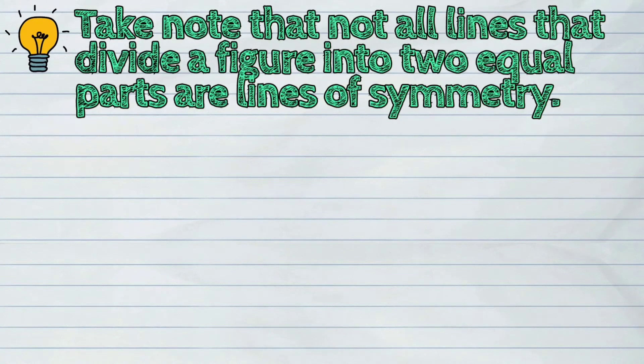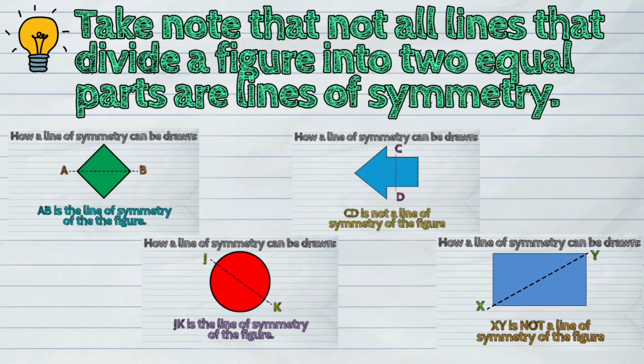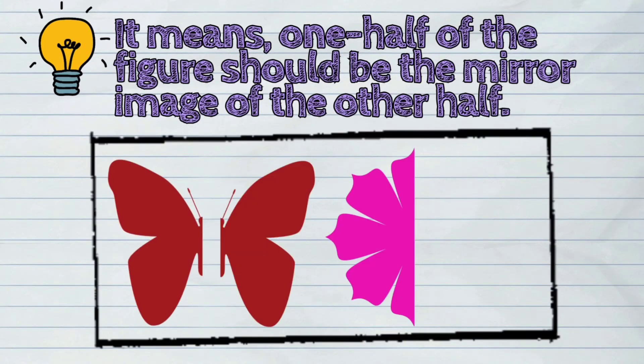Take note that not all lines that divide a figure into two equal parts are lines of symmetry. It means one half of the figure should be the mirror image of the other half.